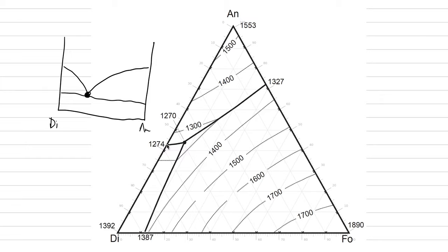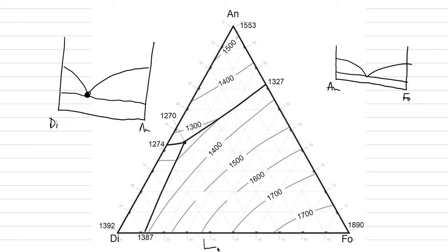What we've done to complicate this diagram is we've added another binary phase diagram on this axis going from anorthite to forsterite, and down here at the bottom we've added another binary phase diagram that goes from diopside to forsterite. By combining these three binary systems, we can actually interpolate between them to create a full ternary diagram.